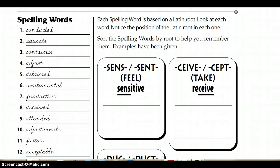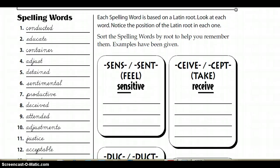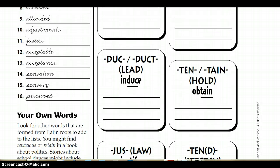Just say them out loud. 1. Conducted. 2. Educate. 3. Container. 4. Adjust. 5. Detained. 6. Sentimental. 7. Productive. 8. Deceived. 9. Attended. 10. Adjustments. 11. Justice. 12. Acceptable. 13. Acceptance. 14. Sensation. 15. Sensory. 16. Perceived.